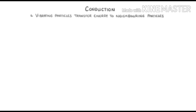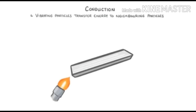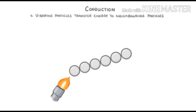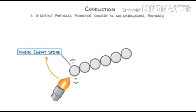Let's look at conduction more closely. The key idea is that vibrating particles transfer energy to neighboring particles. Imagine heating one end of a piece of metal with a Bunsen burner — picture the metal as a series of particles. As the end is heated, energy is transferred to the kinetic energy store of the particles at that end, causing them to vibrate faster and collide with neighboring particles more often and with more energy.